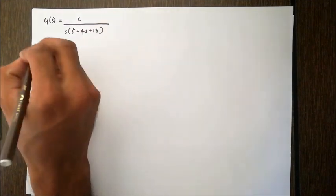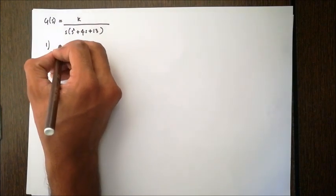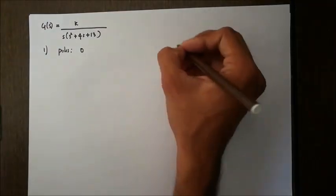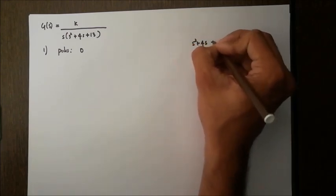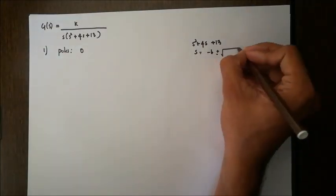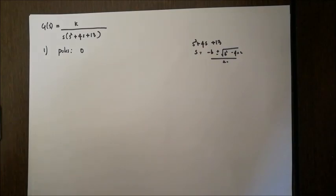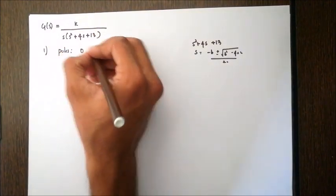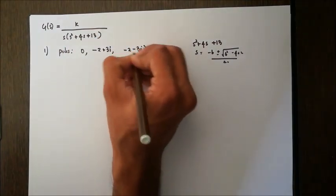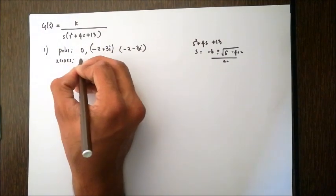The first few steps are similar to the one with real poles. First, we find the poles and zeros. We have one pole at 0, since s is in the denominator, and we solve s² + 4s + 13 = 0 using s = (-b ± √(b² - 4ac)) / 2a. Using the calculator, I obtain the roots as -2 + 3i and -2 - 3i. So we have two complex poles, and there are no zeros.